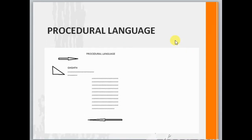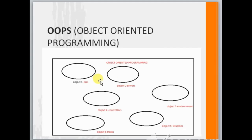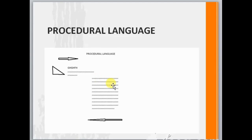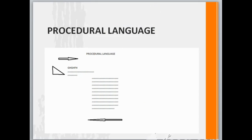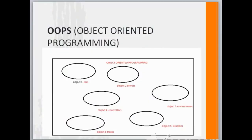In procedural language, everything has to be written in the form of text, and if I want to make some changes — like suppose I want to change a white car with a red car — wherever I have used red car I have to make the changes everywhere. But if I continue this with object oriented programming, I'll make one object, one module for cars, one module for drivers, one module for environment.